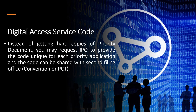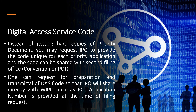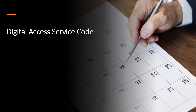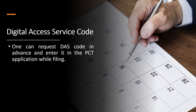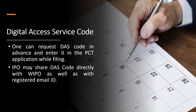Instead of getting hard copies of the priority document, you may request the Indian Patent Office to provide a unique code for each priority application. This code can be shared with the second filing office, which could be either a Convention country or PCT. One can request the preparation and transmittal of a DAS Code so that the Indian Patent Office will share it directly with WIPO once a PCT application number is provided at the time of filing the request. One can also request a DAS Code in advance and enter it in the PCT application while filing. The Indian Patent Office may share the DAS Code directly with WIPO as well as with the registered email ID.